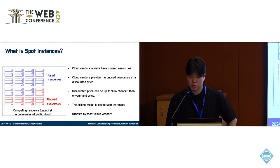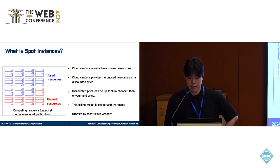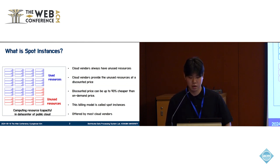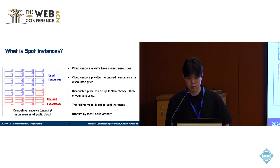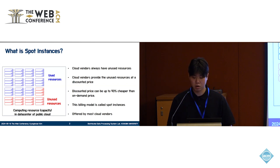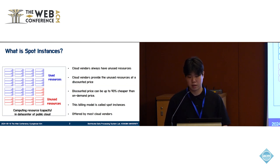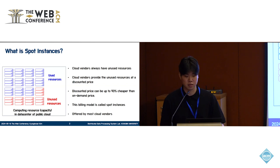Before getting to the main content, I want to briefly introduce what Spot instance is. Cloud vendors always have surplus computing resources to handle peak uses. They offer the surplus resources at a price 90% lower than on-demand instances, which are known as Spot instances. Most cloud vendors including AWS, Azure, and GCP provide Spot instances.